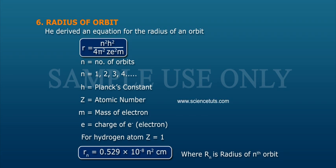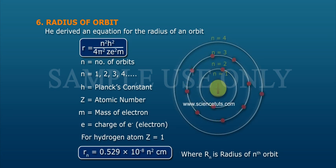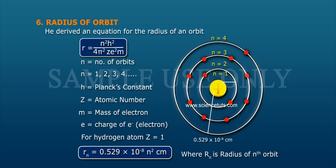Radius of orbit: He derived an equation for the radius of an orbit. r = n²h²/(4π²Zе²m).